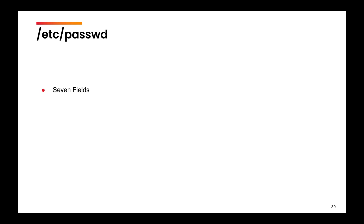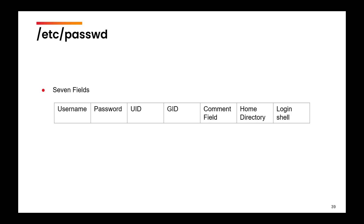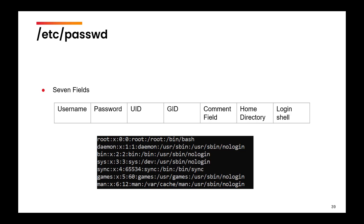Once you open this file you will see that there are seven columns which contain certain information about the user. The first column is the username. The second column shows 'x', which represents the password in encrypted form — you will not be able to see the actual password. The third column is the user ID, the fourth is the group ID (the group to which the user belongs), the fifth is the comment field, the sixth specifies the user's home directory, and the final column tells you the login shell the user is going to use.